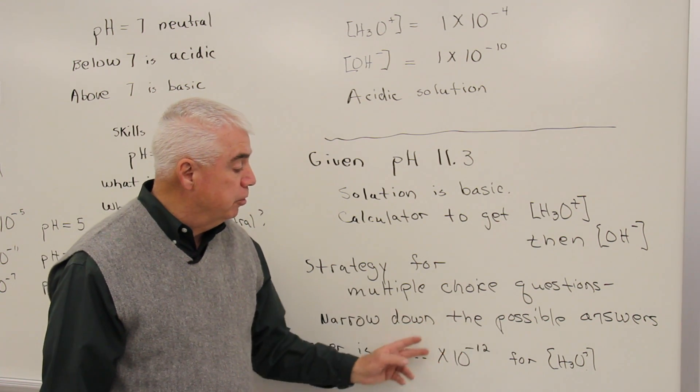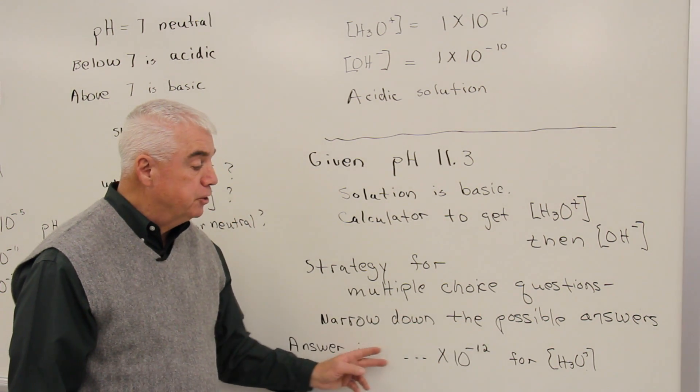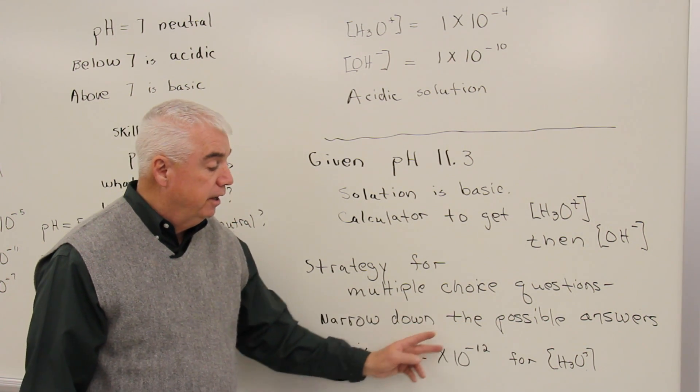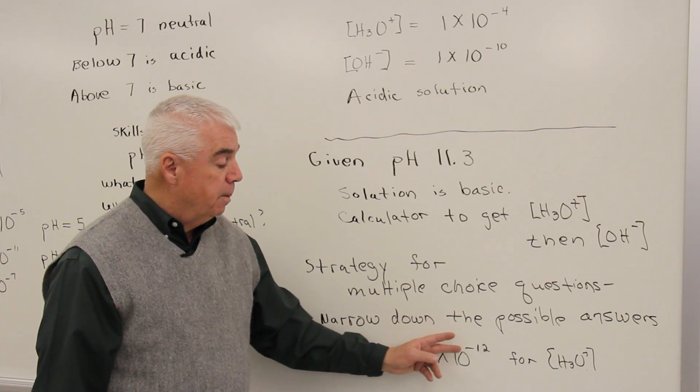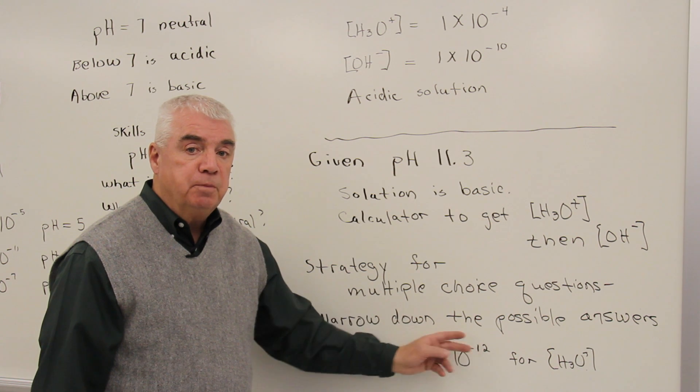Because if I were to convert this number, this is the H3O plus concentration. If I were to convert this into a pH, sort of the reverse of what we're doing, I'd look to this exponent. It's 12.